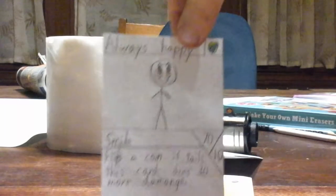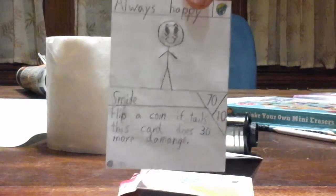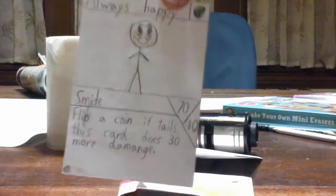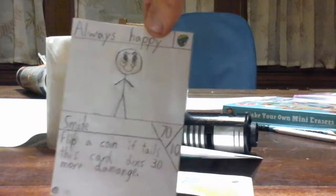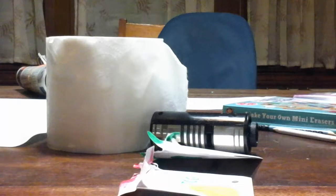Next is Always Happy. He is an earth type. He has 70 health, 10 damage, he is a common. His special ability, Smile, flip a coin, if tails this card does 30 more damage. Not that bad, but yeah, there's Always Happy.